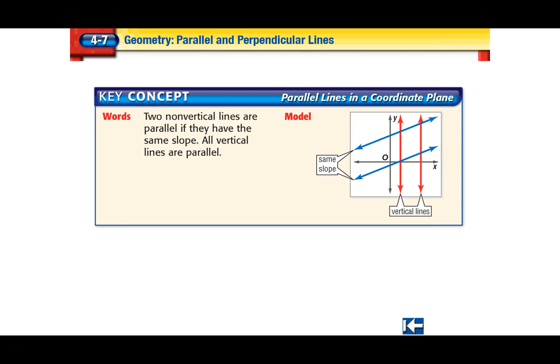So we're talking about parallel lines in a coordinate plane. The coordinate plane is the x and y axes. Any two non-vertical lines are parallel if they have the same slope — that's very important. Any vertical lines are also parallel because they have the same slope as well.